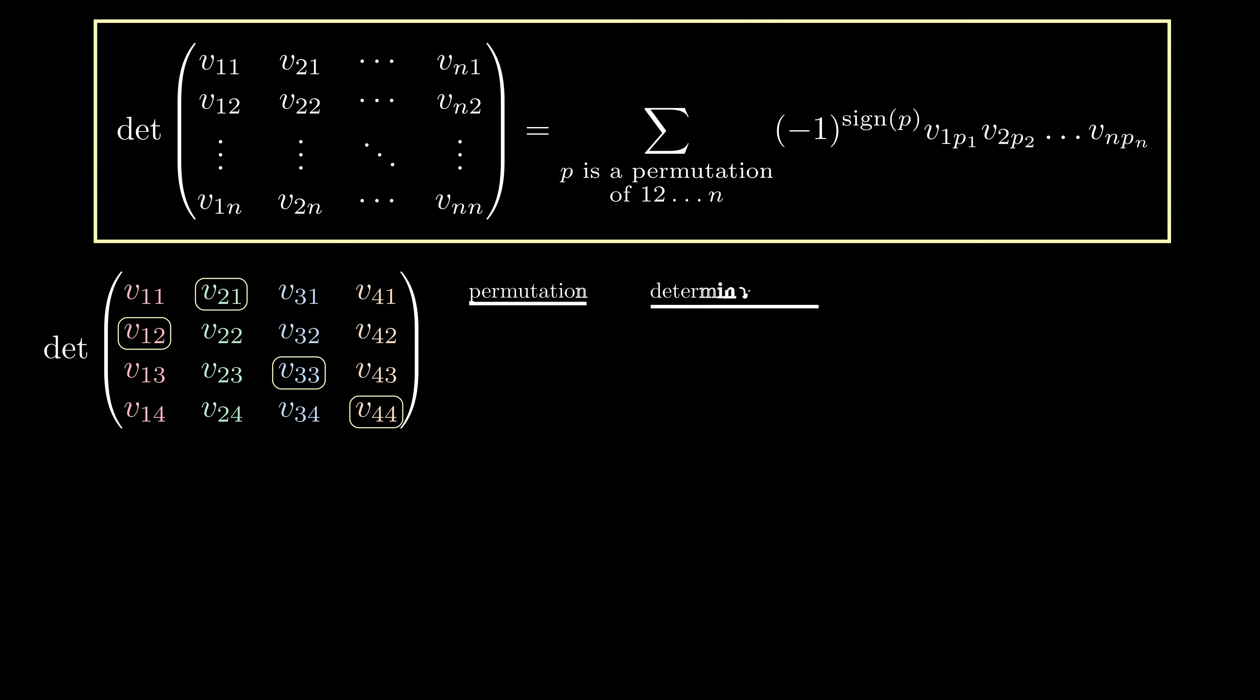We can group these 24 terms into 4 groups of 6, depending on which entry you choose from the first column. Here are the 6 terms you get if you choose the third entry of the first column.